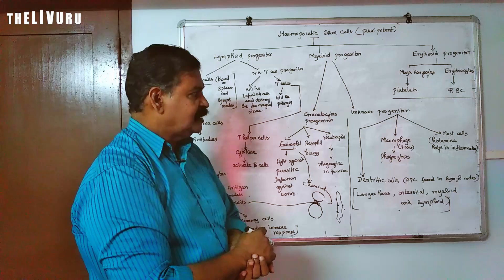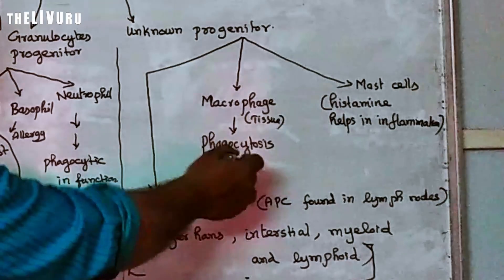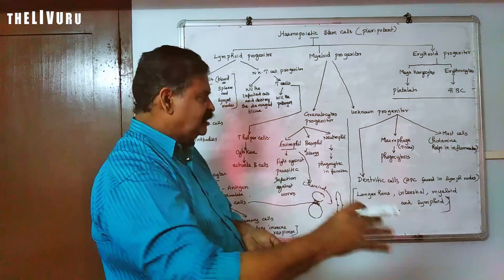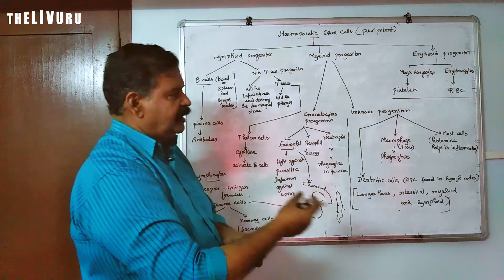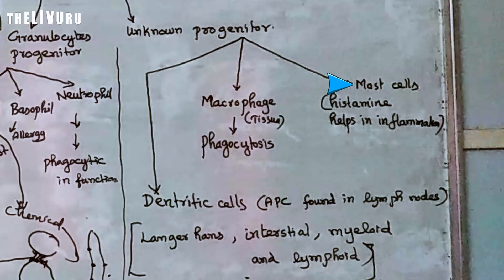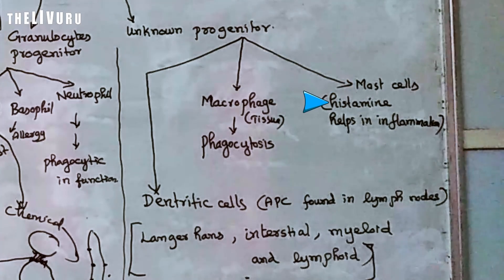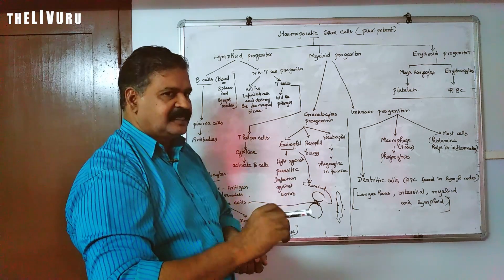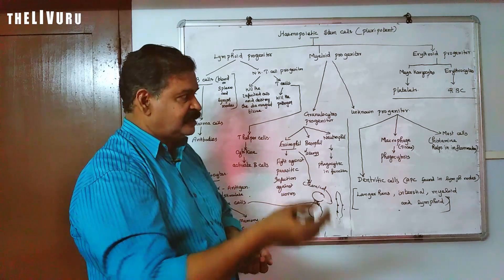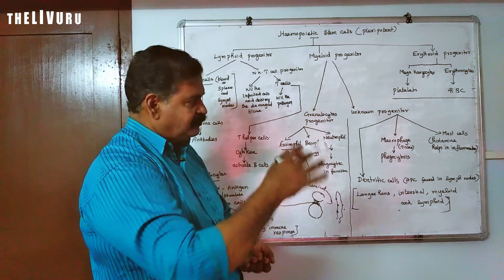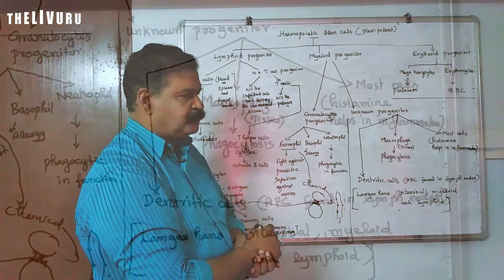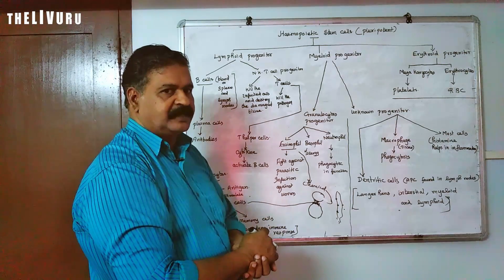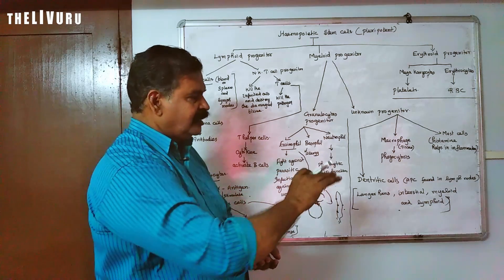Monocytes in tissues are called macrophages, and they digest pathogens. Mast cells are associated with histamine release. The histamine from mast cells causes inflammation. We can observe inflammation as a result of mast cell activation.